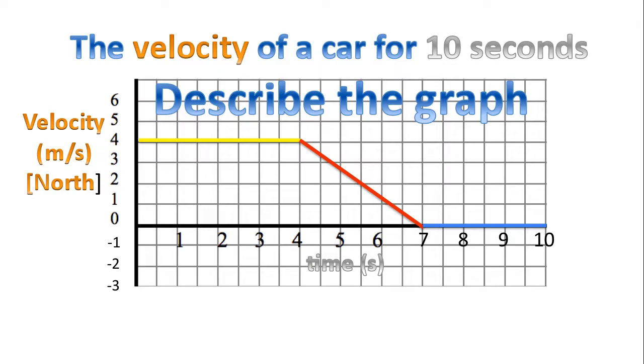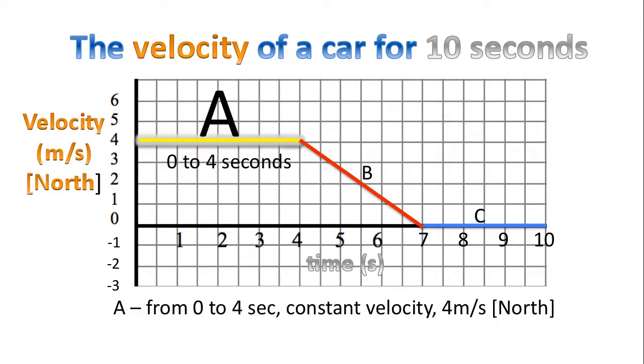And so for starters we're going to describe this graph. For the first section from zero to four seconds it's constant velocity. The velocity is not changing—four meters per second north.